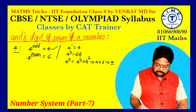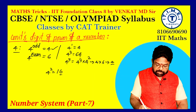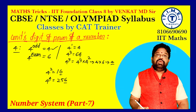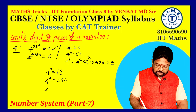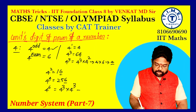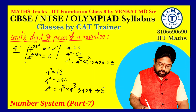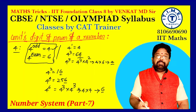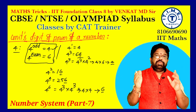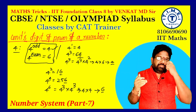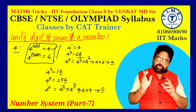For 4 raised to an even power: 4^2 = 16 (unit digit 6), 4^4 = 256 (unit digit 6), and 4^6 = 4^3 × 4^3 — unit digit 4 × 4 = 16 — unit digit 6. So 4 raised to any even power always gives unit digit 6. Remember: 4 power odd → unit digit 4; 4 power even → unit digit 6.